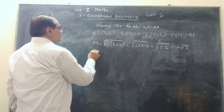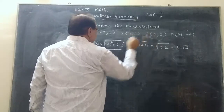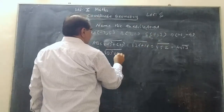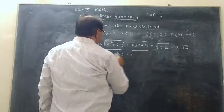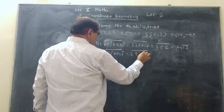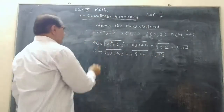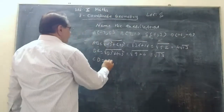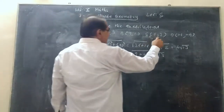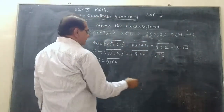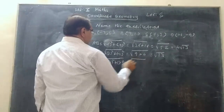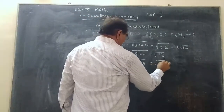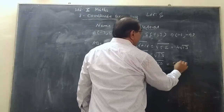Now BC: √[(3-0)² + (1-3)²] = √[9 + 4] = √13. Now CD: √[(0-(-1))² + (3-(-4))²] = √[(1)² + (7)²] = √[1 + 49] = √50 = 5√2.